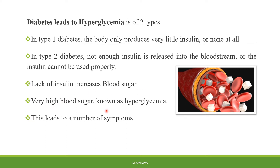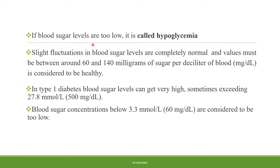Very high blood sugar is called hyperglycemia and this leads to a number of symptoms. If blood sugar levels are too low, it is called hypoglycemia. Normal values must be between 60 to 140 milligrams of sugar per deciliter of blood for a person to be considered healthy. In type 1 diabetes, blood sugar levels can get very high, sometimes exceeding 27.8 millimoles per liter, which means 500 milligrams per deciliter. Blood sugar concentrations of 3.3 millimoles per liter — just 60 milligrams per deciliter — are considered hypoglycemic.